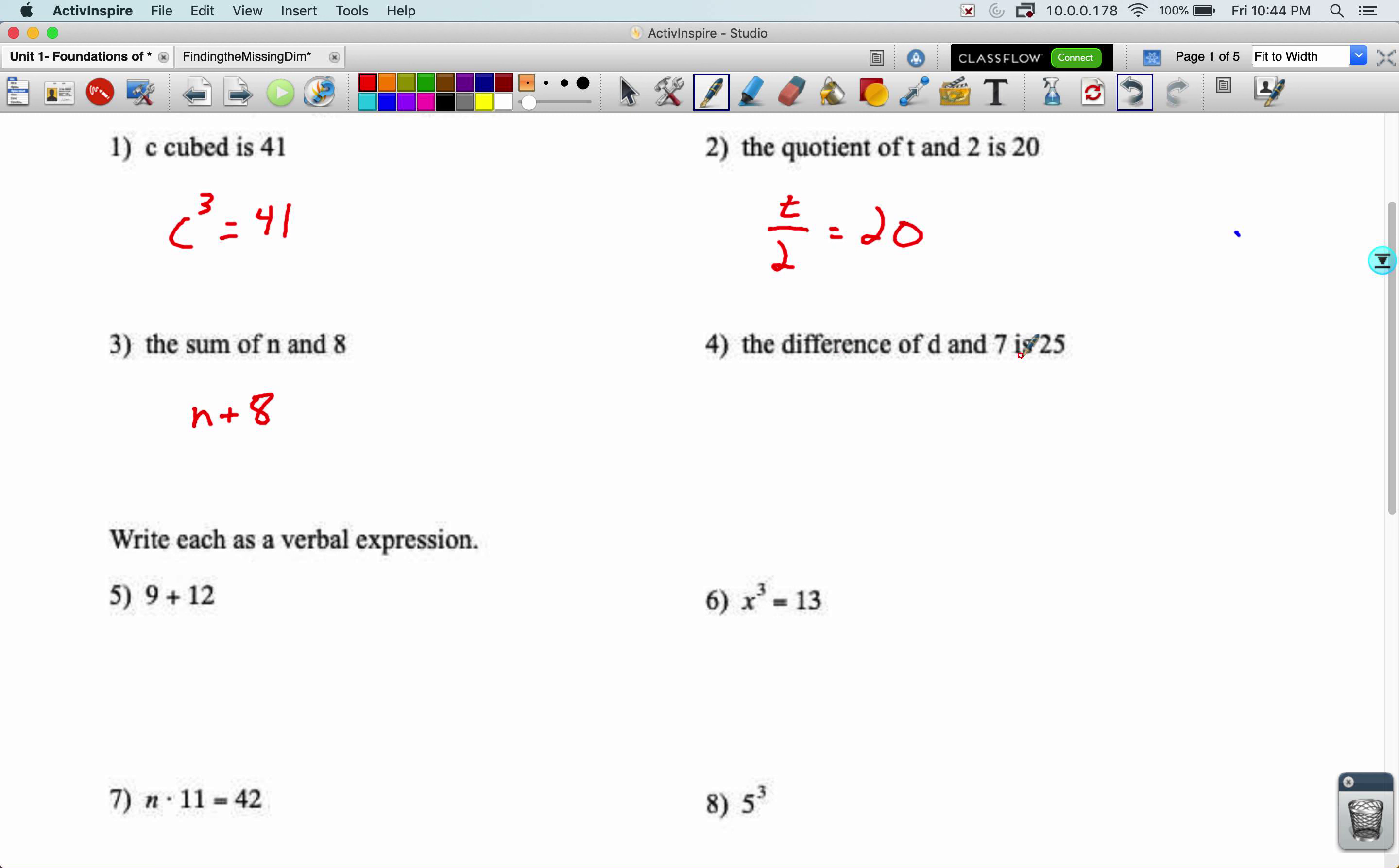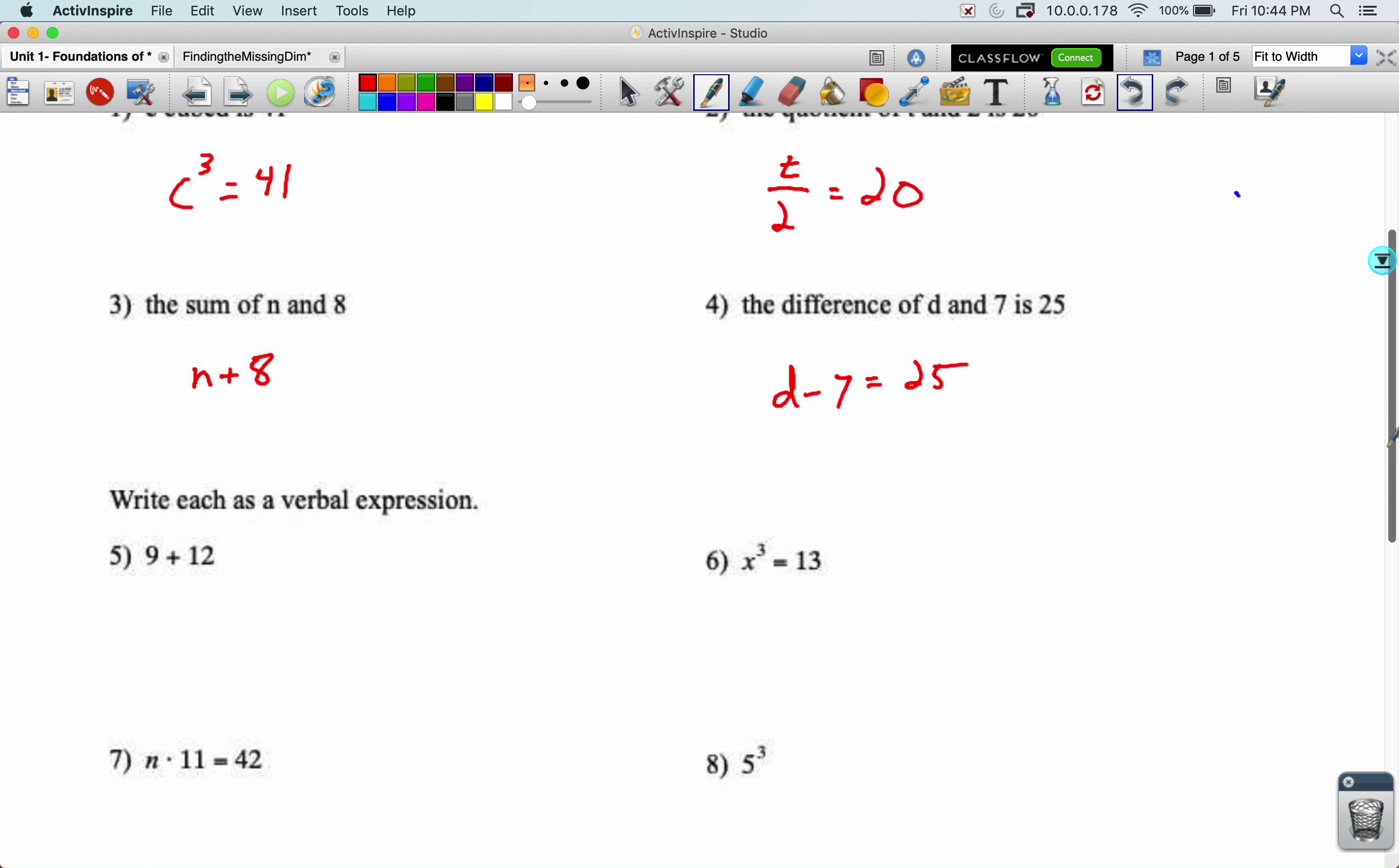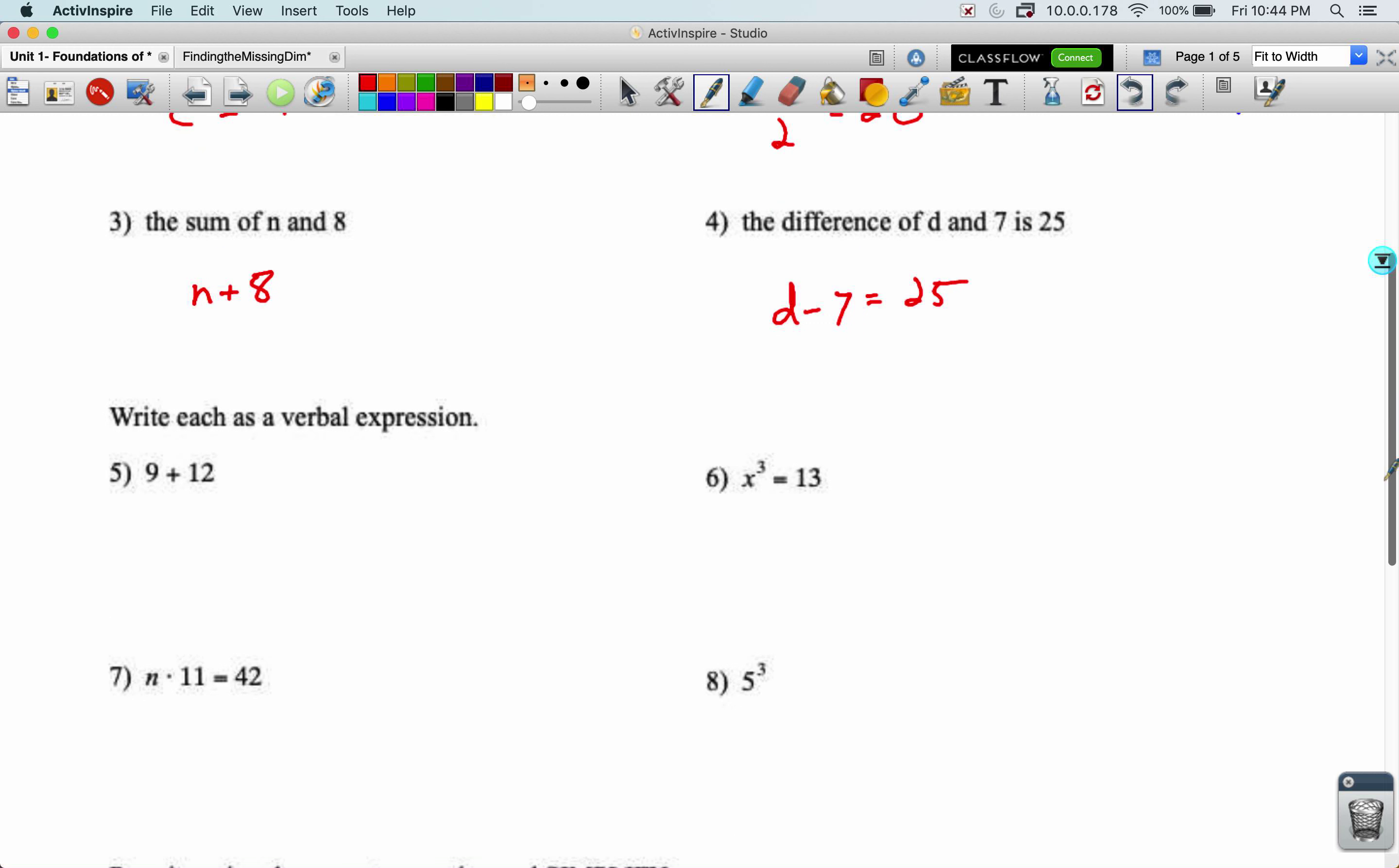The difference of d and seven is 25. That word difference means use subtraction to combine our two numbers. Is becomes an equal sign. 25 goes to the other side. All right, time to go the other direction.